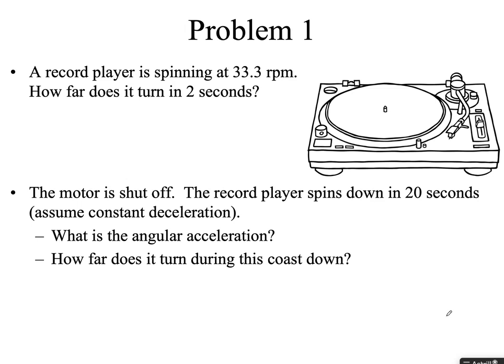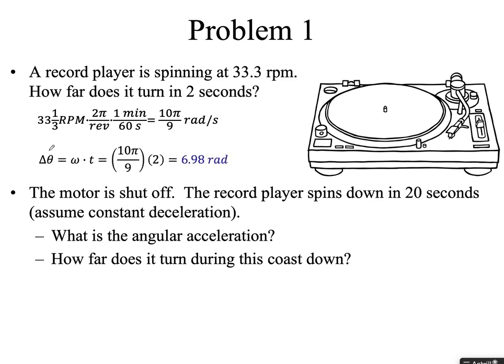First quick example: a record player spins at 33⅓ RPM. How far does it turn in two seconds? First we convert RPM to radians per second: 33⅓ revolutions per minute times 2π radians per revolution divided by 60 seconds gives omega in radians per second. Then delta theta equals omega times time, giving us the angular displacement in radians. Then the motor shuts off and the record player spins down in 20 seconds — the angular acceleration alpha equals the change in omega over change in time, final minus initial.